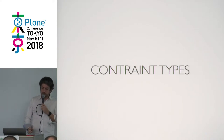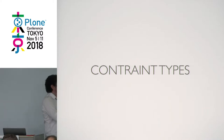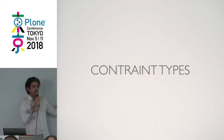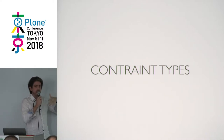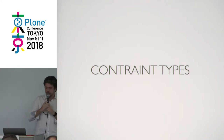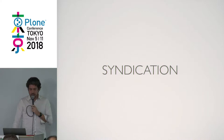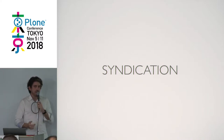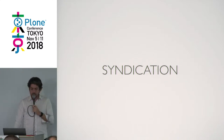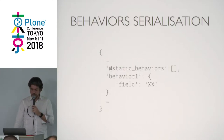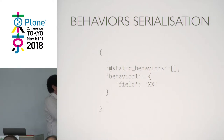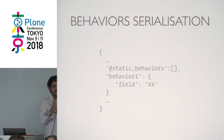Constraint types — what Plone uses to say 'on this folder I just want documents or news or whatever' — is already implemented. There's no API for it in Plone right now, so we created the API and hope Plone adopts it as standard. Syndication, to be able to subscribe to a specific folder, is also already implemented in Guillotina CMS.